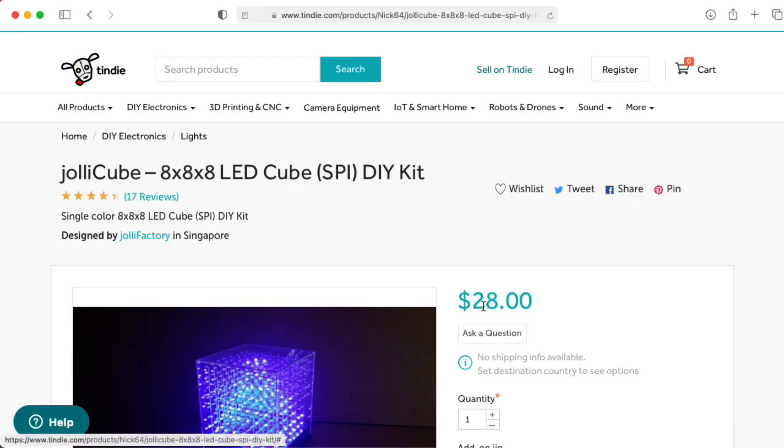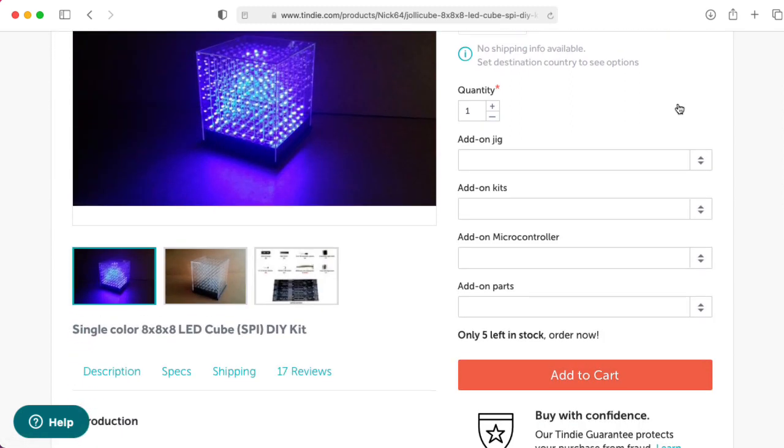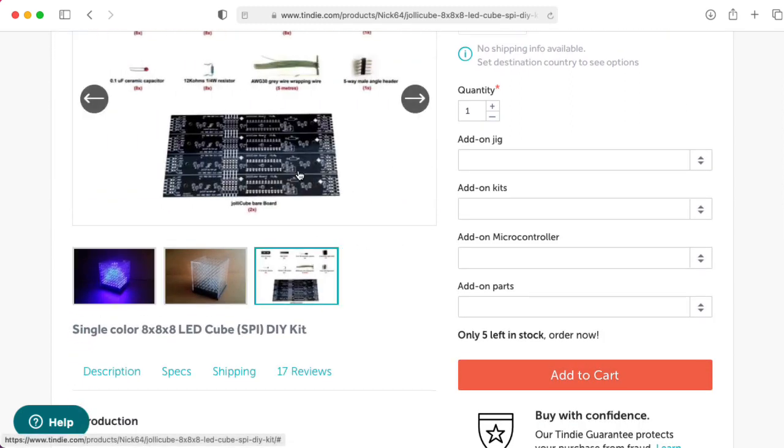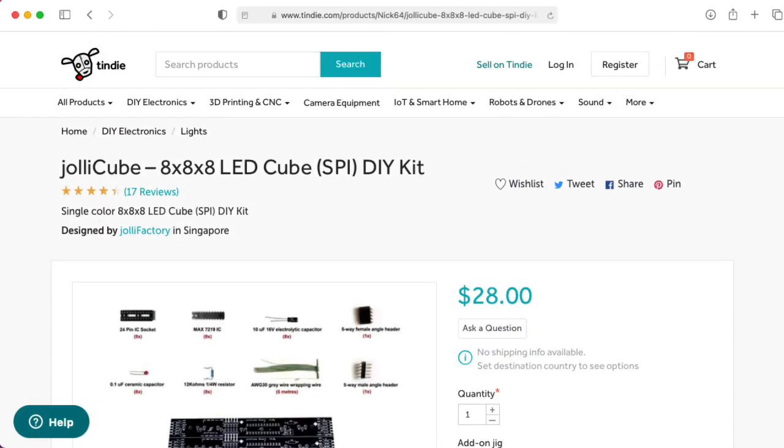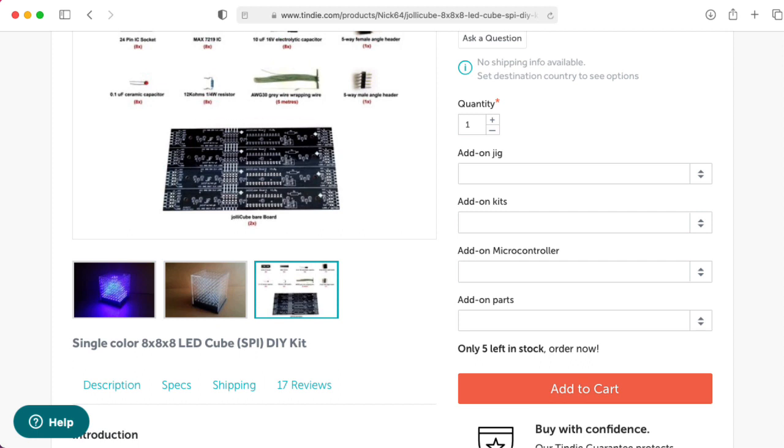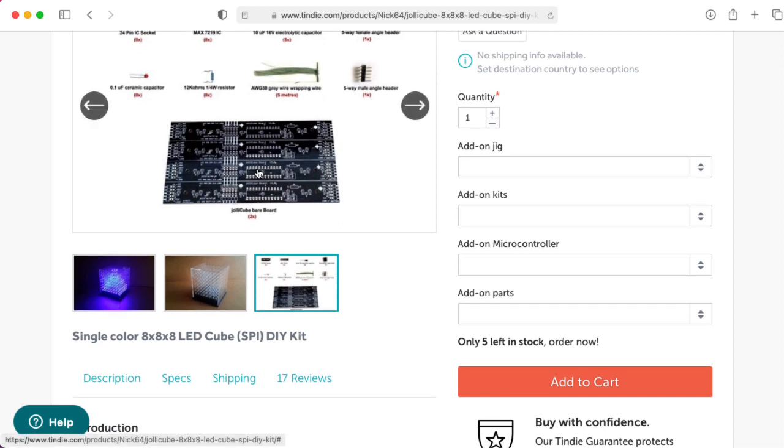I should mention, the cube itself is this JollyCube kit. When you order the kit, you get a bunch of these circuit boards, and this is what the cube is constructed from. When we built it, we actually got the full version of the kit that also includes the LEDs.